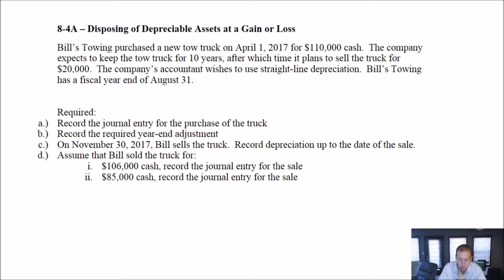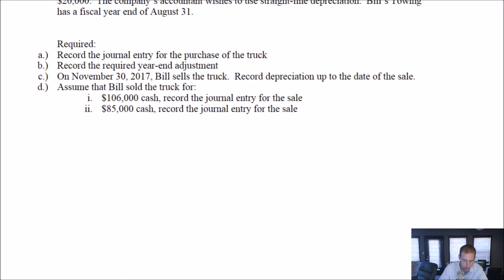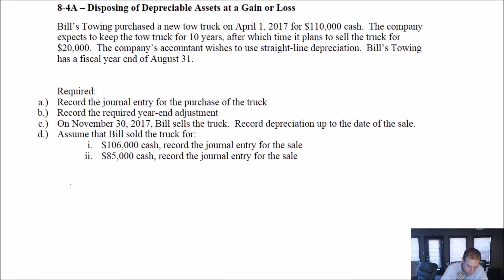Bill's Towing purchased a new tow truck on April 1st, 2017 for $110,000 cash. So let's do this journal entry as we see them. April 1st, 2017, this is our answer to part A. We bought a new tow truck for $110,000 cash. So debit truck, credit cash, $110,000. There's journal entry A.